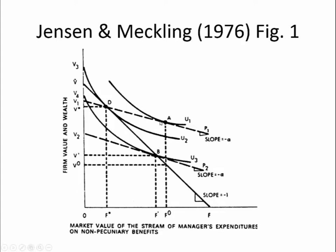That would mean they're keeping 70% of the firm and selling 30% to outsiders, because 1 minus 0.7 is 0.3. If the outsiders figured that the manager would maintain their same level of non-pecuniary benefit consumption, then the outsiders would be willing to pay 1 minus alpha times V-star for their share of the firm. But there's a problem — the manager's behavior is not going to stay the same. In the new situation, when the manager wastes a dollar on non-pecuniary benefits, it only costs him or her 70 cents, because they only own 70% of the firm.